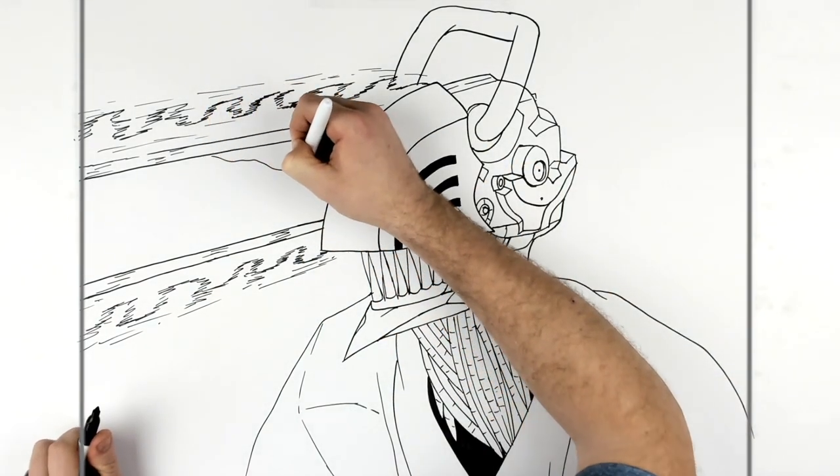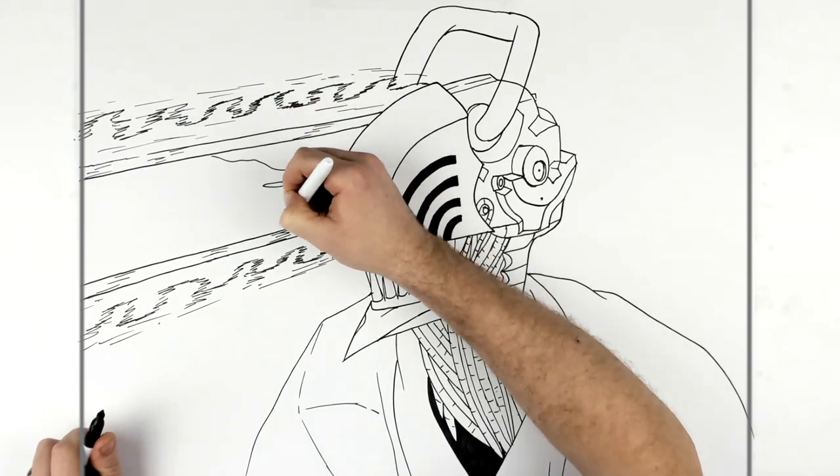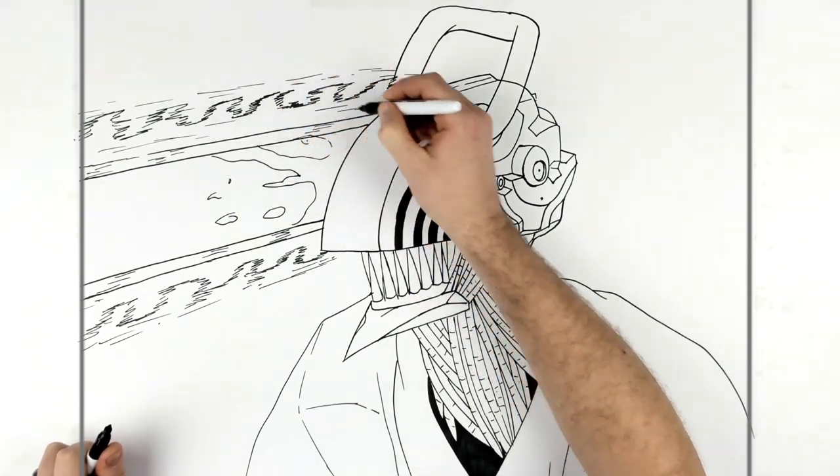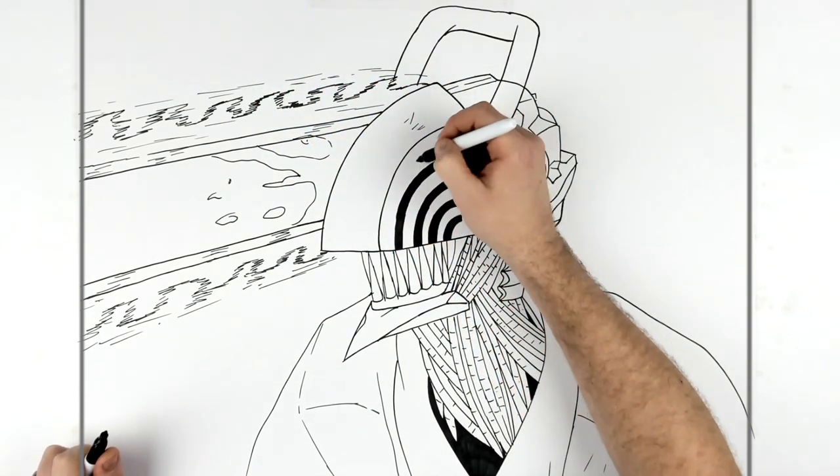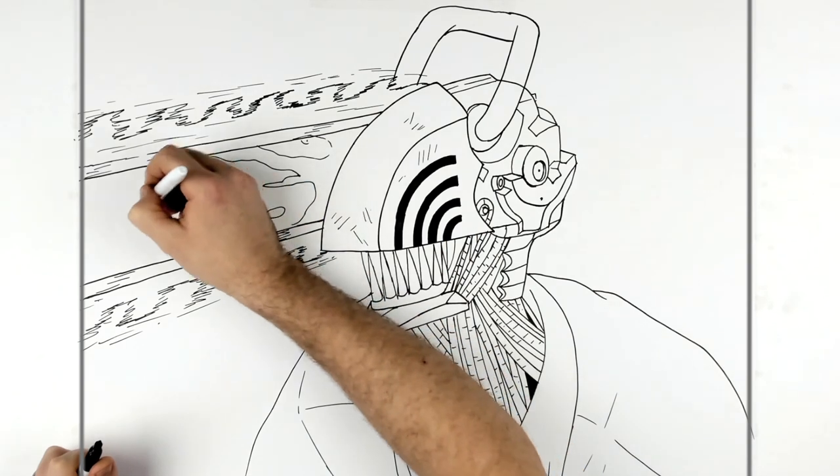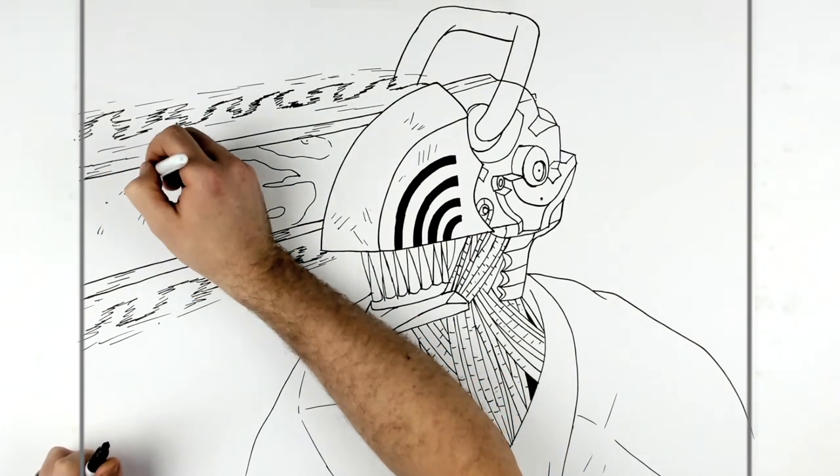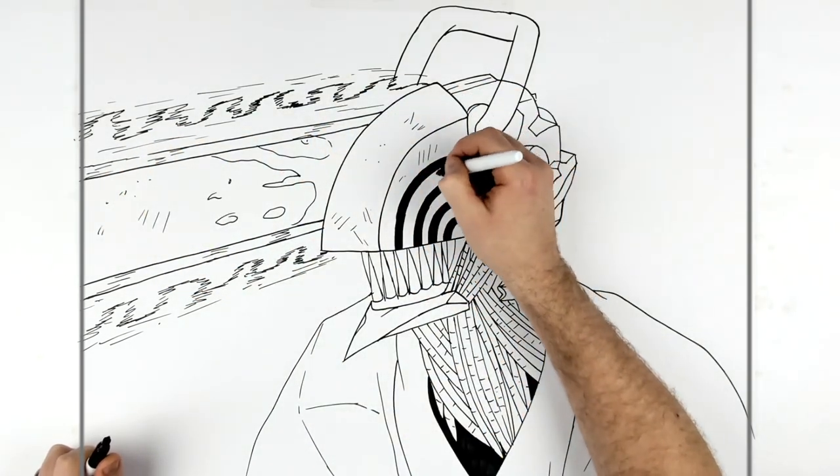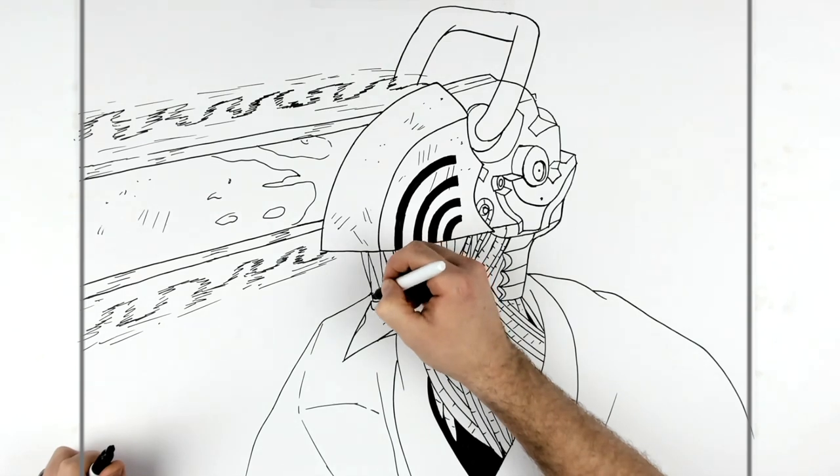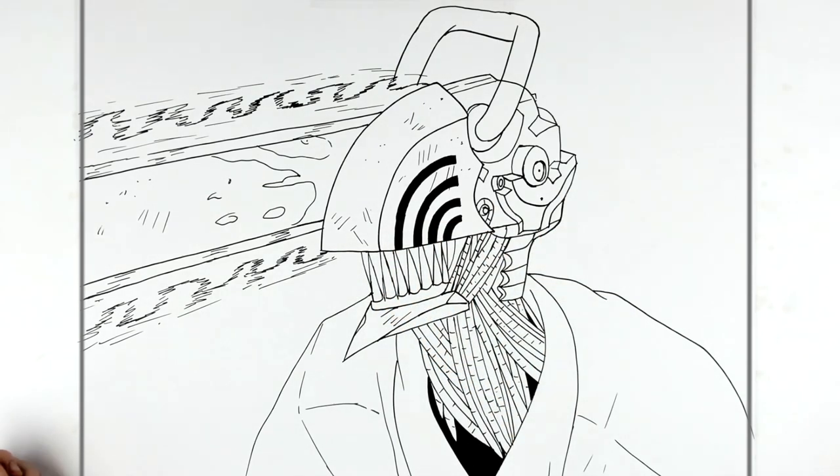And then if you want splatters of blood and stuff on the chainsaw. Maybe like some scratches on his mask. But there you go, that's how to draw Chainsaw Man close up. Hope it was helpful. Thanks for watching, see you in the next one. Bye.